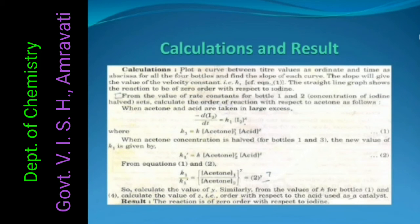Calculations and Results. Plot a curve between the titer value as ordinate and time as abscissa for all the 4 bottles and find the slope of each curve. The slope will give the value of velocity constant, k. The straight line graph shows the reaction to be of zero order with respect to iodine.